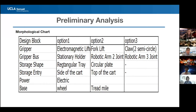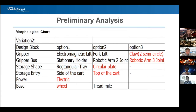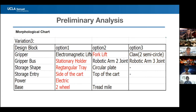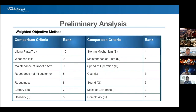The morphological chart explores multiple options for the robot, including different types of grippers, storage shapes, storage entry, power, and base. We have three design variations, all highlighted in red. To decide which variation to choose, we use a weighted object method, assigning numbers to each item in the object tree and comparing them. After applying the weighted object method, the ranking shows importance where 10 is most important and 1 is least important for our application.